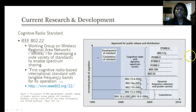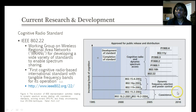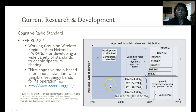Here we have a depiction of the evolution of IEEE standardization activities relating to dynamic spectrum access. It spans from 1995 to the present, showing how it evolved with the coexistence of standards all the way toward becoming a true cognitive radio technique and standard.